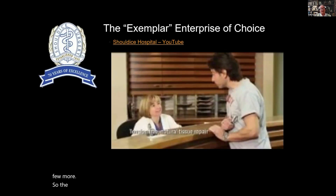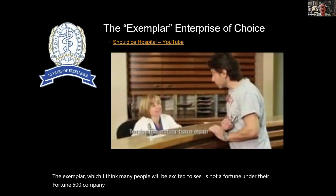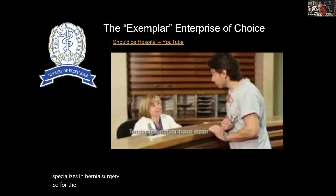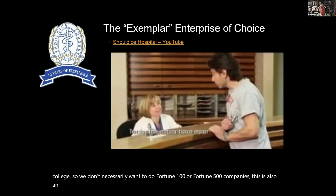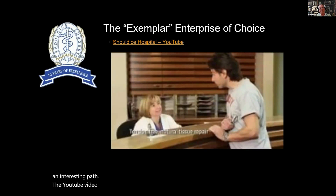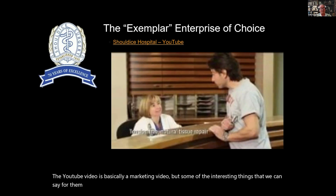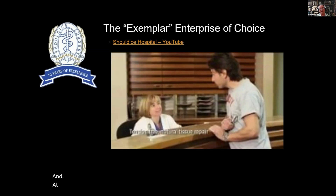The exemplar, which I think many people will be excited to see, is not a Fortune 100 or 500 company, but a hospital — Shouldice Hospital, located in Ontario, Canada — which specializes in hernia surgery. For those teaching in a liberal arts college who don't necessarily want to use Fortune 100 companies, this is an interesting path. The complication rate for this type of surgery is typically one in ten, and at Shouldice it's one in 200.